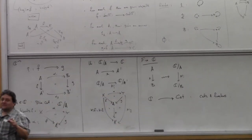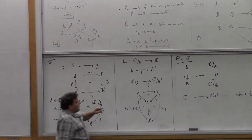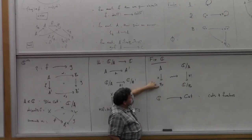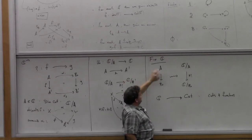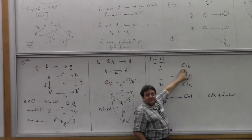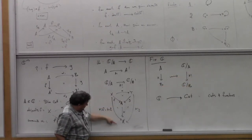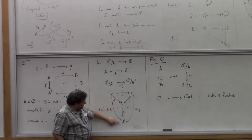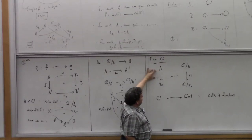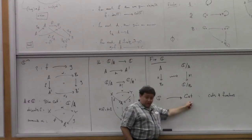Anyone have foundational queasiness? Cat is too big — the objects of this category are categories, which creates size issues. One way to deal with this: fix some foundational system — set theory, type theory, or even category theory. With a notion of smallness, a small category is one where the objects and arrows form a set. Cat is then defined as the category of all small categories, and Cat itself will not be small — that resolves the apparent puzzle.